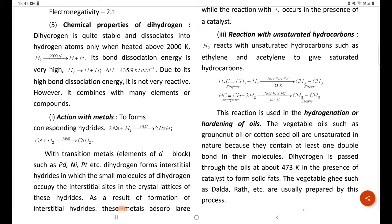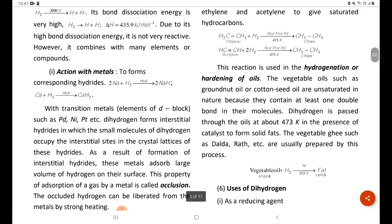With transition metals, elements of d-block such as Pd, Ni, Pt, etc., dihydrogen forms interstitial hydrides in which the small molecules of dihydrogen occupy the interstitial sites in the crystal lattices of these hydrides.